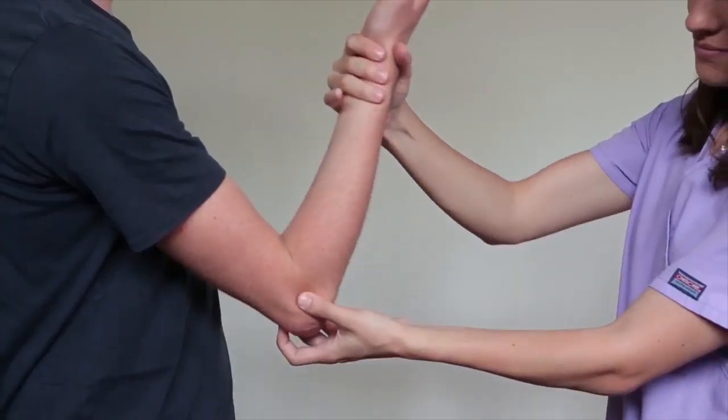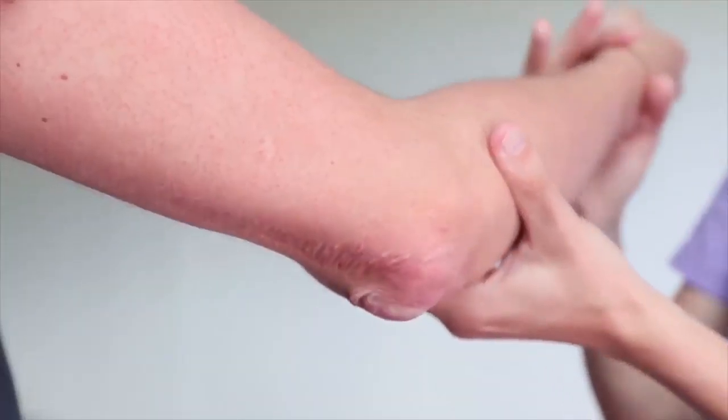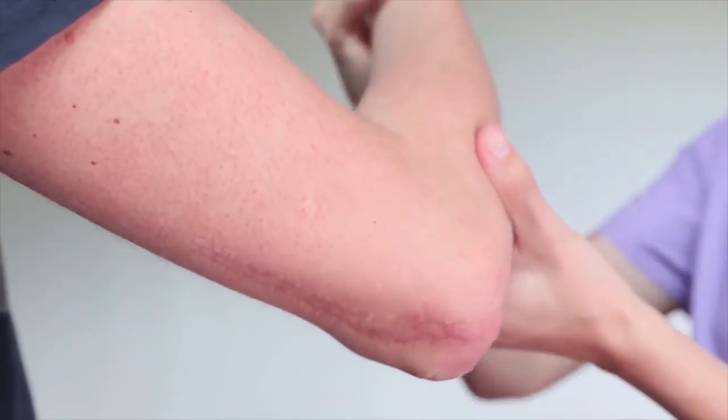Elbow contracture caused by traumatic injury is a major cause of disability, especially among children and the elderly.